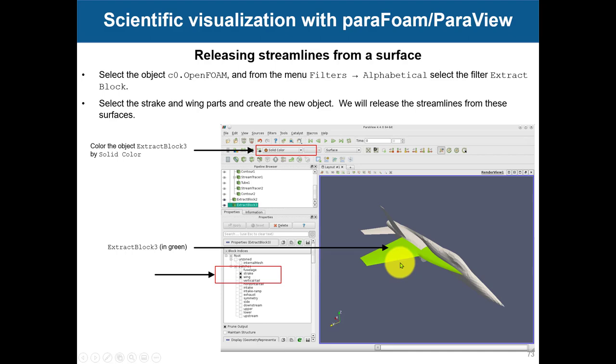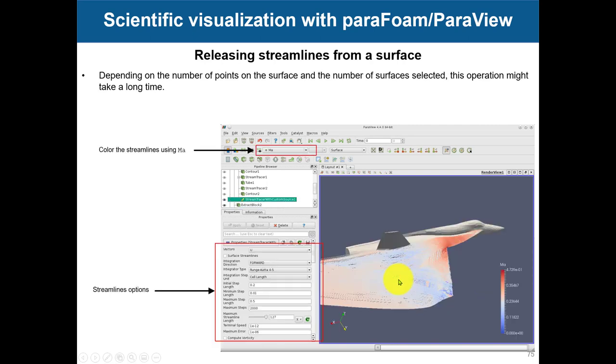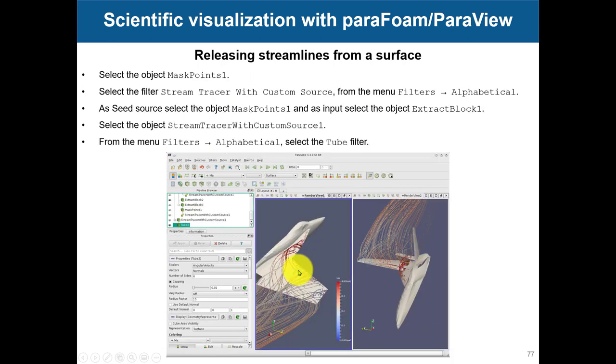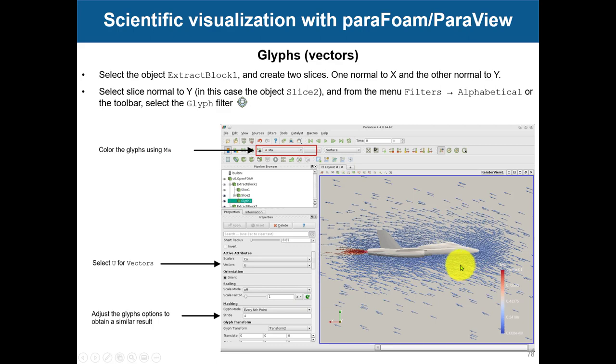So a little bit splitting the screen, synchronizing views, releasing the streamlines. Put nice streamlines, then selecting a small surface of the domain, and then we can release the strings as well from there. Here we're releasing streamlines for every single surface cell, but then we can reduce that one by using another filter, masking.